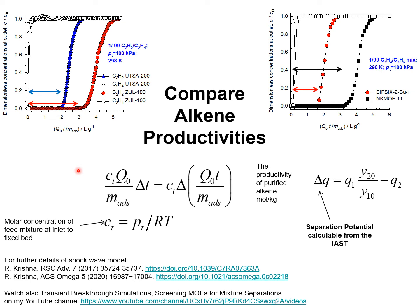The experiments must also be carried out at the same total pressure and temperature. Here I show experiments for separation of a 1:99 mixture of C2H2 and C2H4. The triangles are experiments for UTSA200 and the circles are experiments for ZUL100. Comparing the two breakthroughs, we see that the time interval during which purified C2H4 can be recovered is indicated by the blue arrow for UTSA200 and the red arrow for ZUL100.